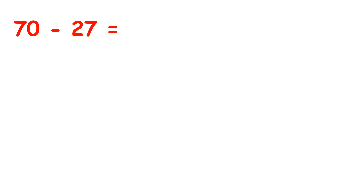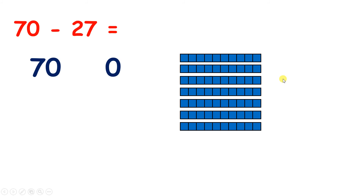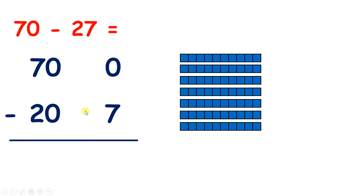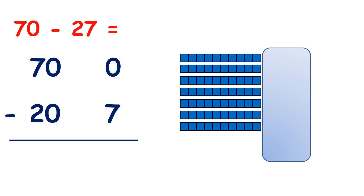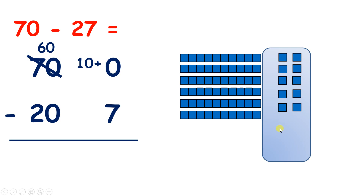So here we have 70 subtract 27. Now we can't really partition 70, so I'm going to write 70 and 0, because we have 7 tens and 0 units. Pause the video and see if you can answer this question. We can partition 27 into 20 and 7, so we need to subtract 20 and 7 from 70. Starting with the units, we can see that we don't have any units and we can't take away 7 from nothing. So we're going to take 10 from 70, so we have 60, and then we have 10 plus 0, or 10 units. We've taken a 10 and turned it into units.